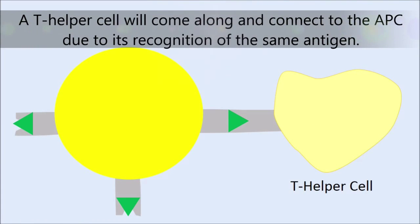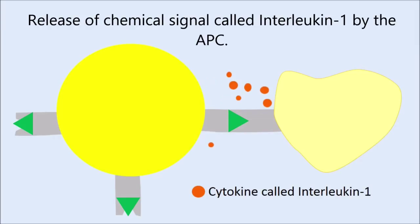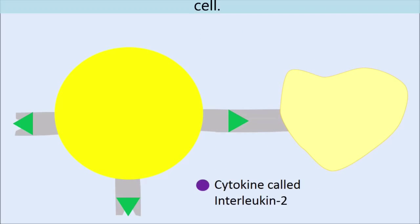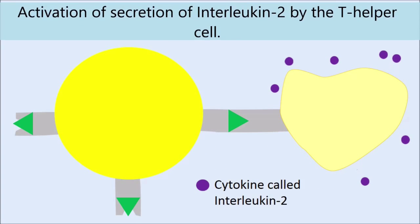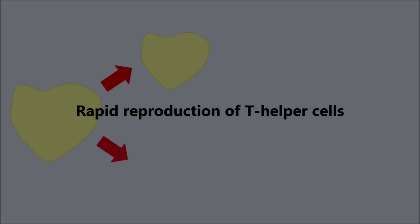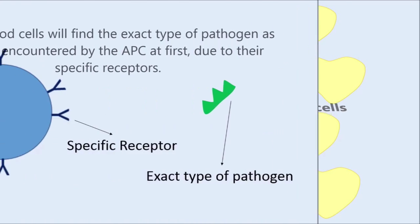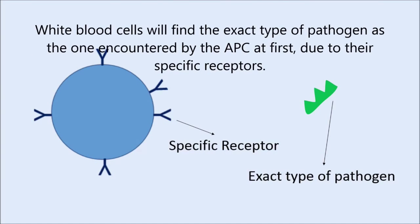A T helper cell will come along and connect to the APC due to its recognition of the same antigen. This connection will make the APC release a chemical signal called interleukin-1, which will activate the secretion of interleukin-2 by the T helper cell. Interleukin-2 will result in the rapid reproduction of T helper cells.